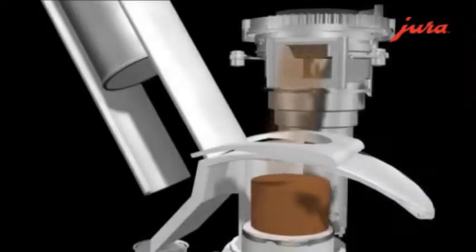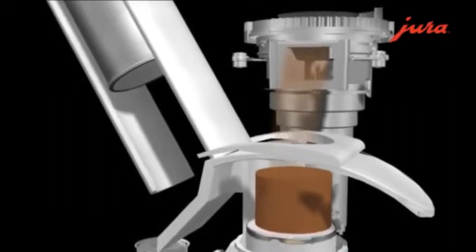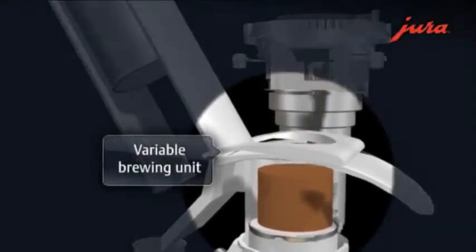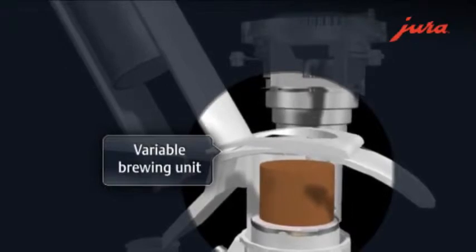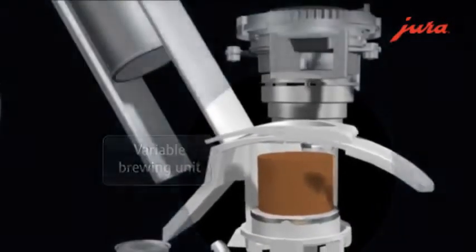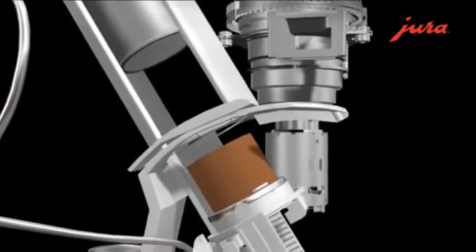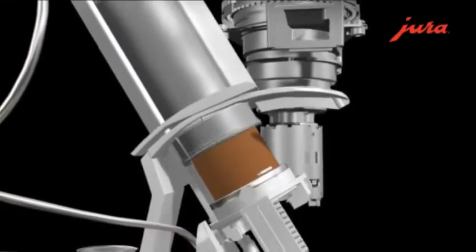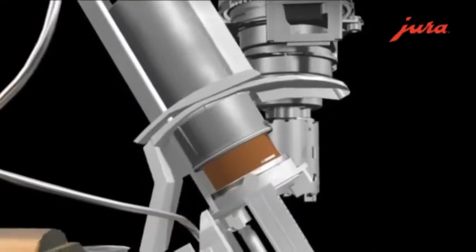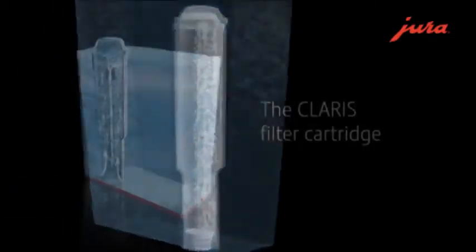The coffee powder falls into the variable brewing unit. This unit holds between 5 and 16 grams of coffee powder. The Jura brewing unit does automatically what a practiced barista can do after years of experience. The electronic system precisely adapts the pressure in the brewing unit to the selected volume of powder.